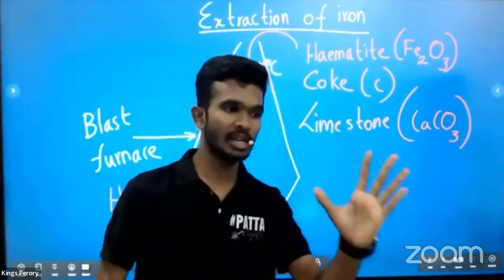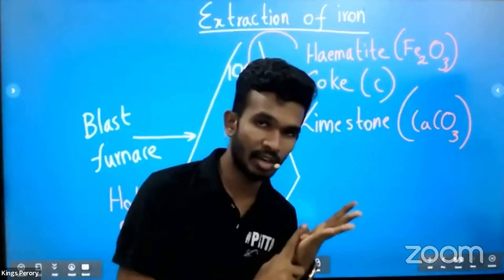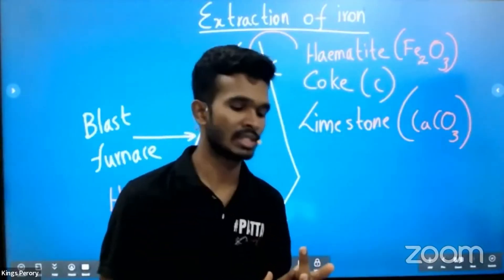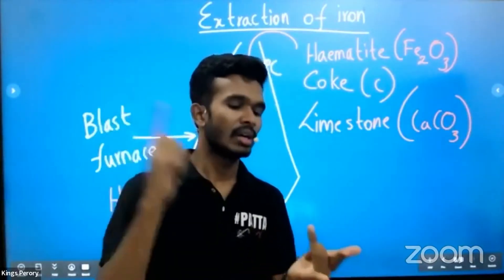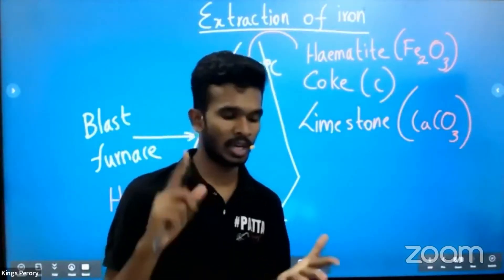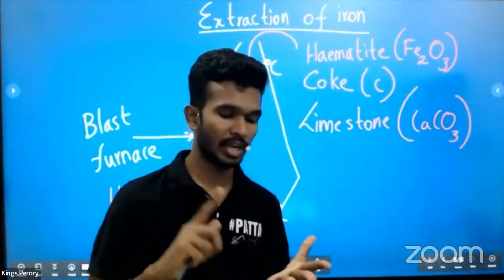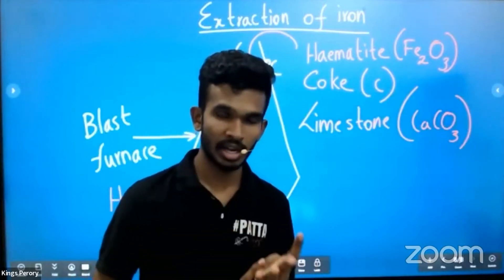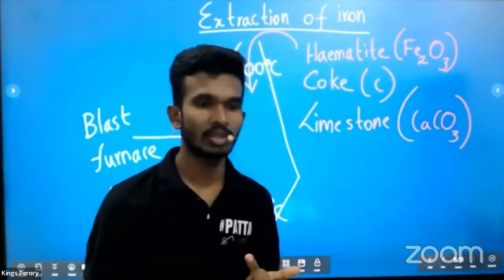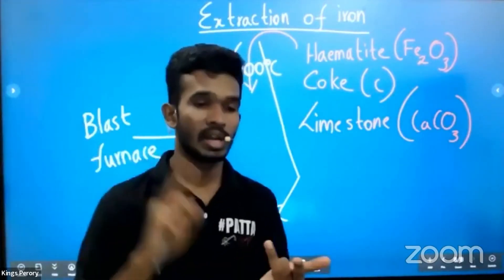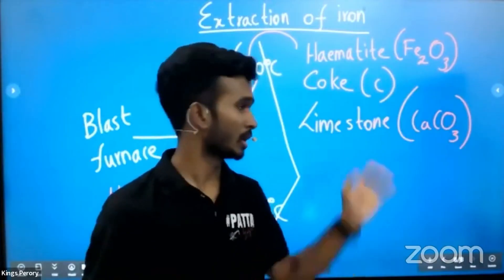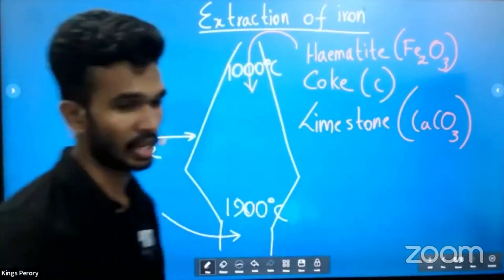So the three raw materials are: hematite (Fe2O3), coke (carbon), and limestone (calcium carbonate, CaCO3). These are inserted from the top of the blast furnace.